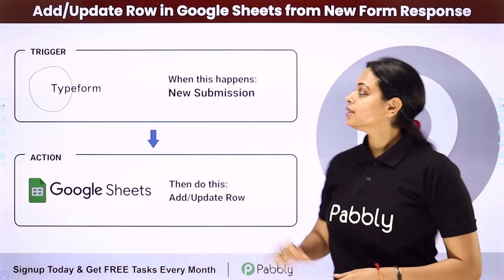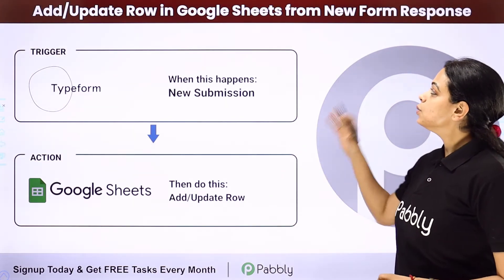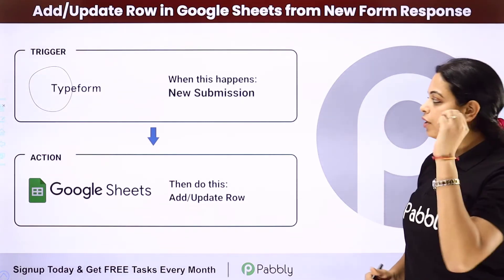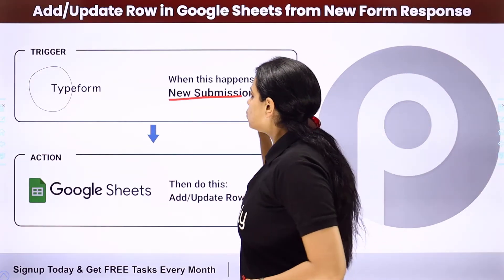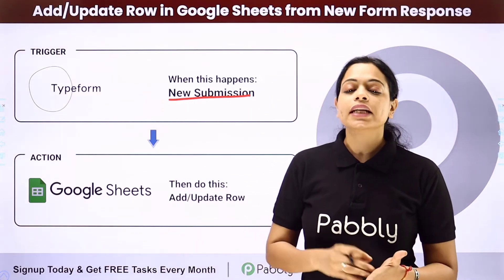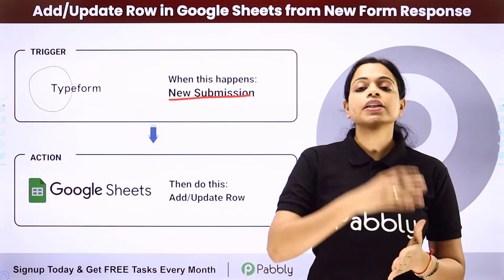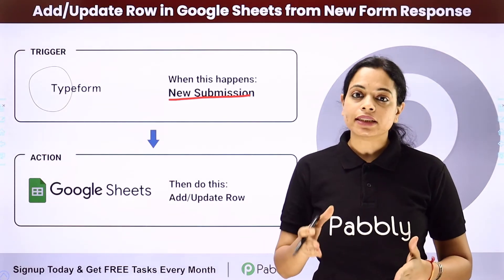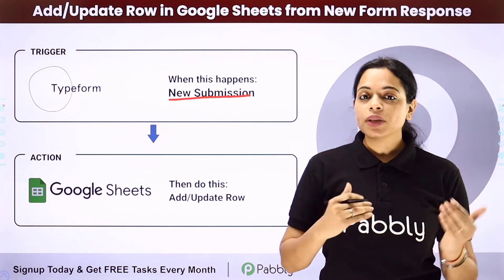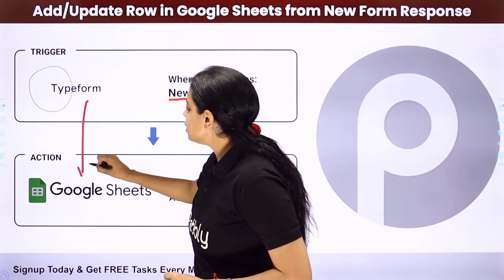In this video, we are going to understand how to add or update a row in Google Sheets from a new form response. Every time you receive a new response through any form builder application, if that particular information is already there in your Google Sheet, then it should be updated. And if it is not there, then it should be added as a new row. You will have to integrate these two applications to do that.